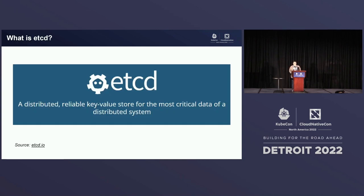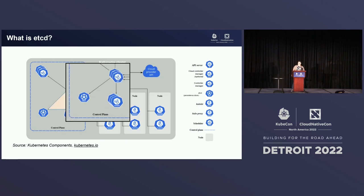First of all, what's etcd? etcd is a distributed key-value store for storing critical data for a distributed system. You can use it for anything, but it's probably most known for being a core component of Kubernetes. You don't actually talk to etcd with your applications — it's part of the kube API server functions to talk to etcd to store and retrieve the Kubernetes cluster state.